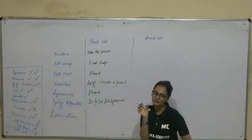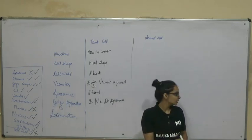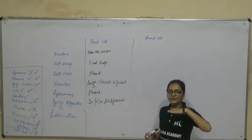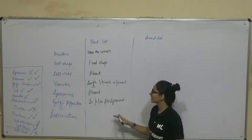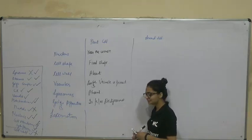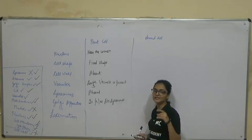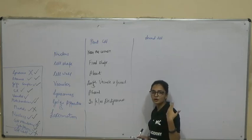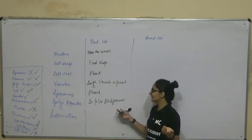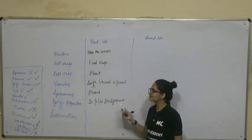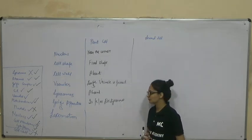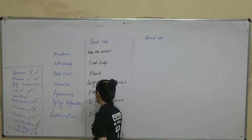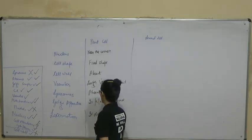The Golgi apparatus in plant cells is known as dictyosomes. In animals, one proper Golgi apparatus is present with tightly arranged sack-like structures. But in the case of plant cells, instead of a full Golgi apparatus, smaller Golgi bodies called dictyosomes are present, which together form the Golgi apparatus and store food. Regarding locomotion, plant cells do not show locomotion.